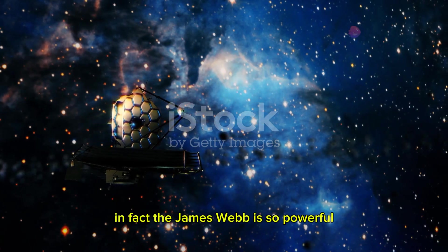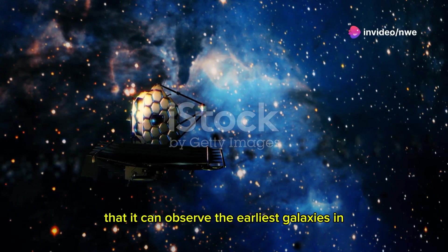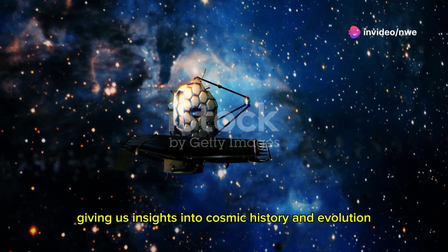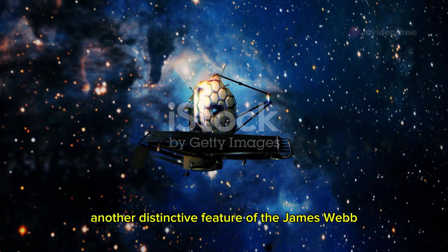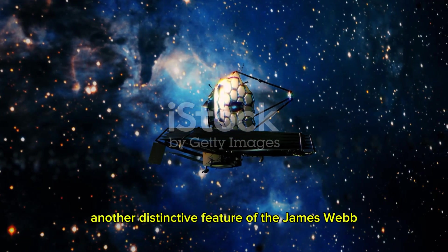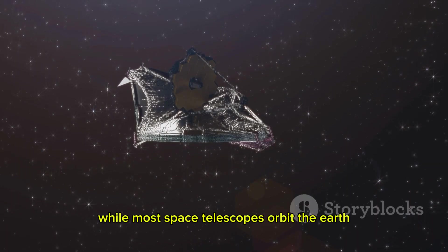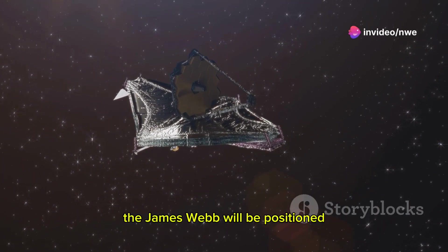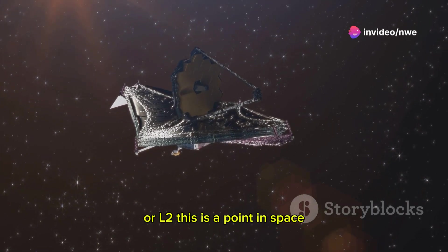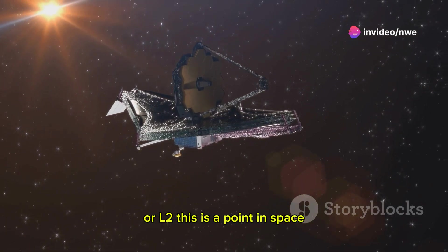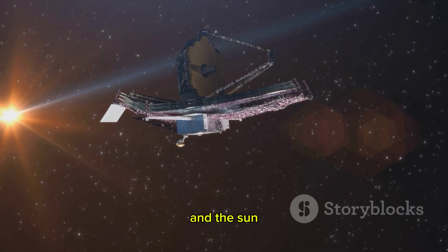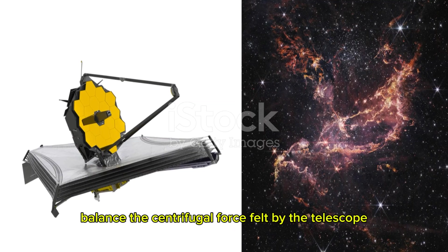In fact, the James Webb is so powerful that it can observe the earliest galaxies in the universe, giving us insights into cosmic history and evolution. Another distinctive feature is its location. While most space telescopes orbit the Earth, the James Webb will be positioned at the second Lagrange point, or L2. This is a point in space where the gravitational forces of the Earth and the Sun balance the centrifugal force felt by the telescope, allowing it to maintain a stable position with minimal energy expenditure.